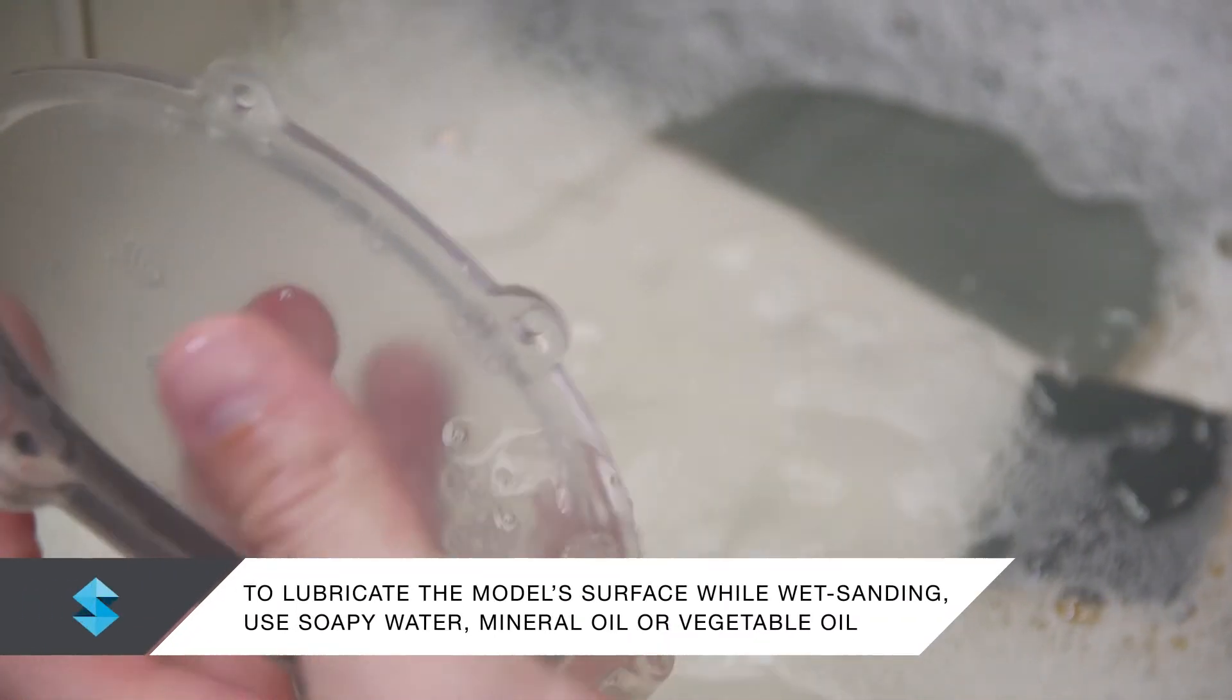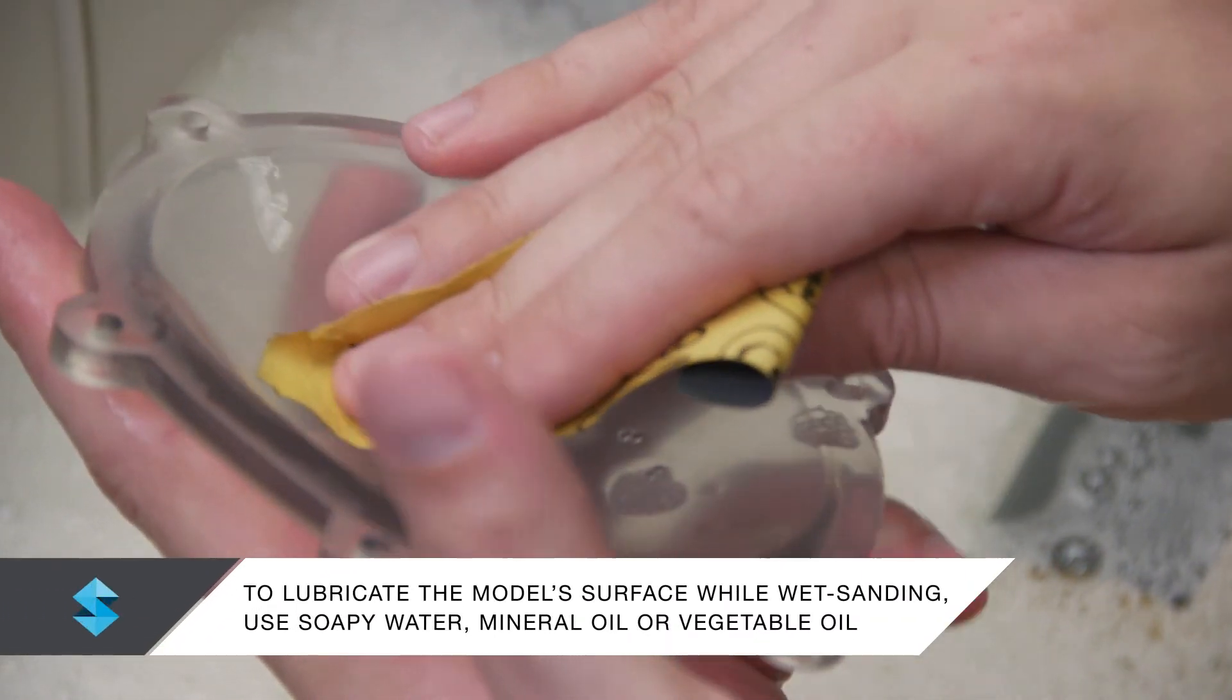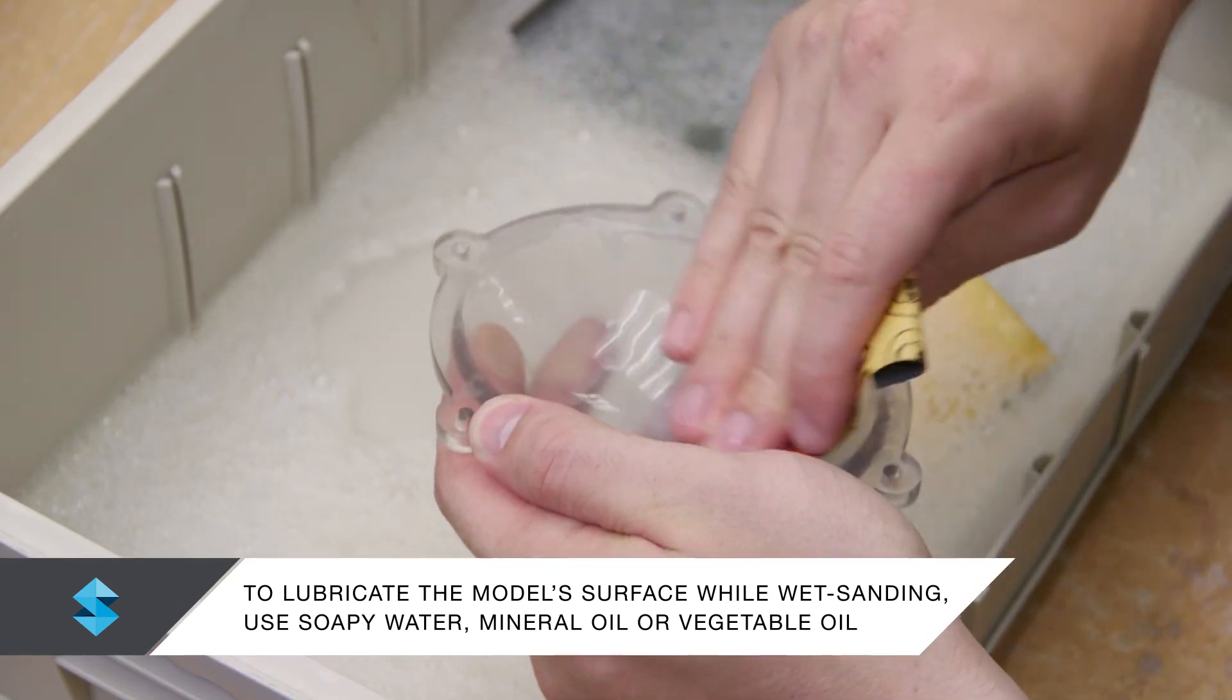To lubricate the model surface while wet sanding, use soapy water, mineral oil, or vegetable oil.